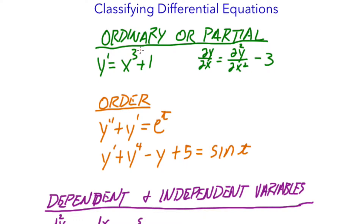Ordinary or partial is fairly self-explanatory. You'll have the normal notation if it's ordinary, and you'll have the partial notation if it is a partial differential equation.